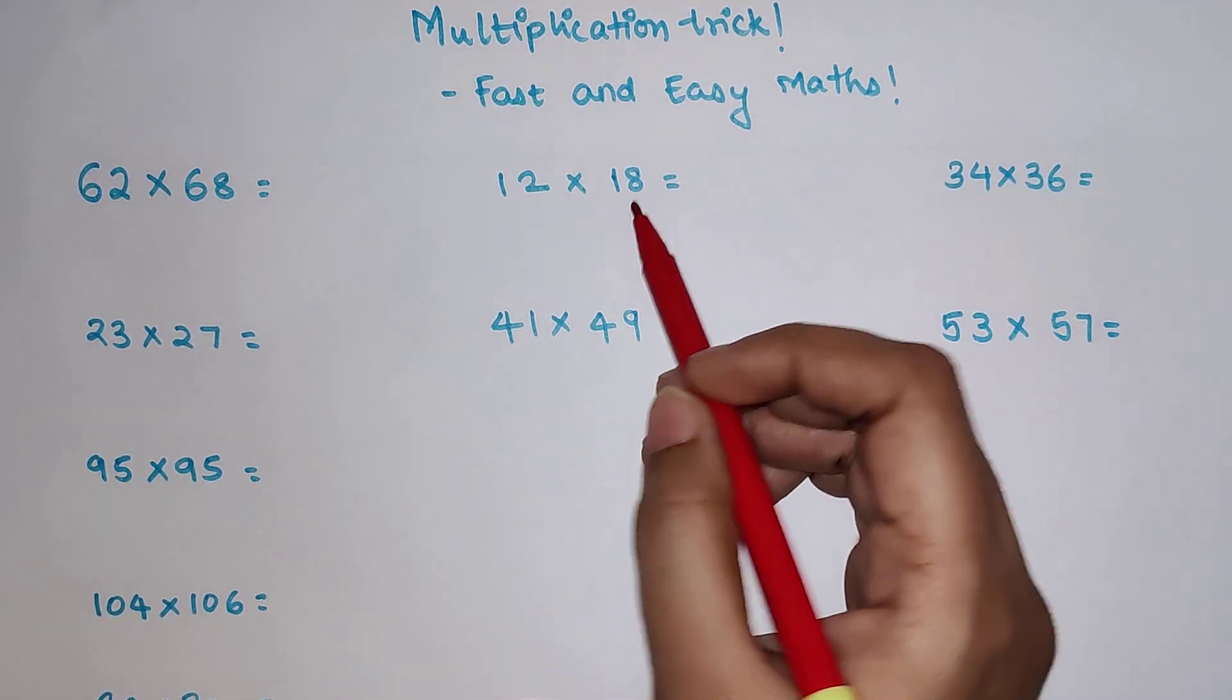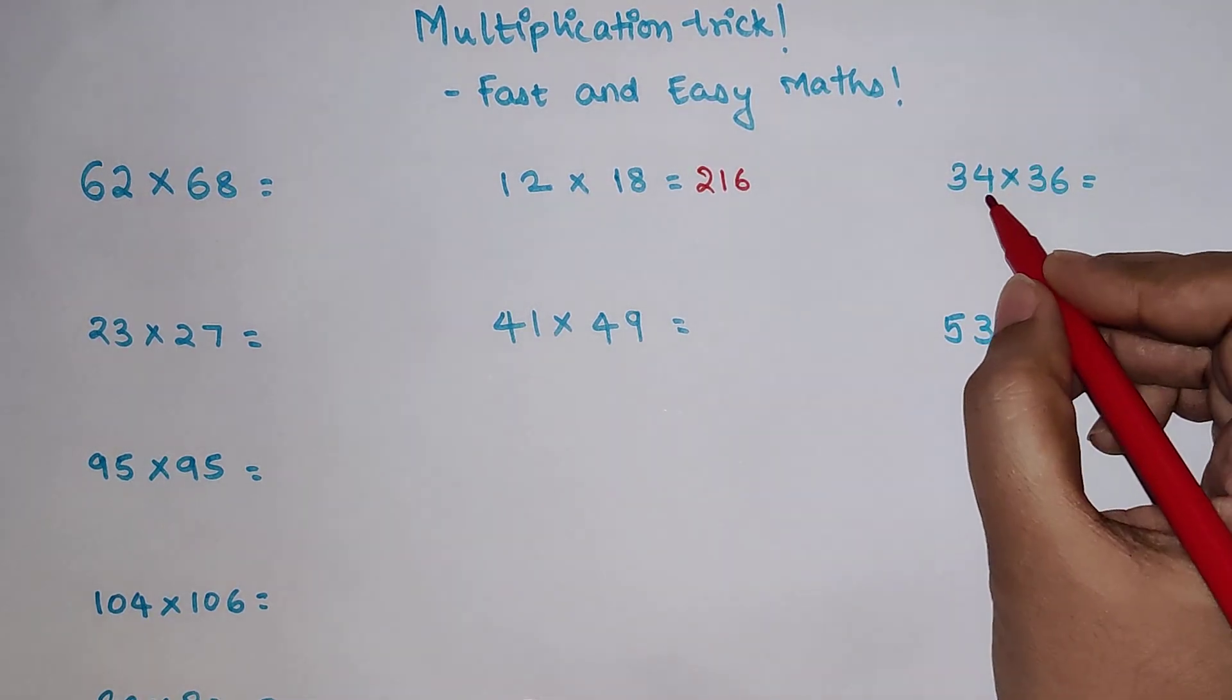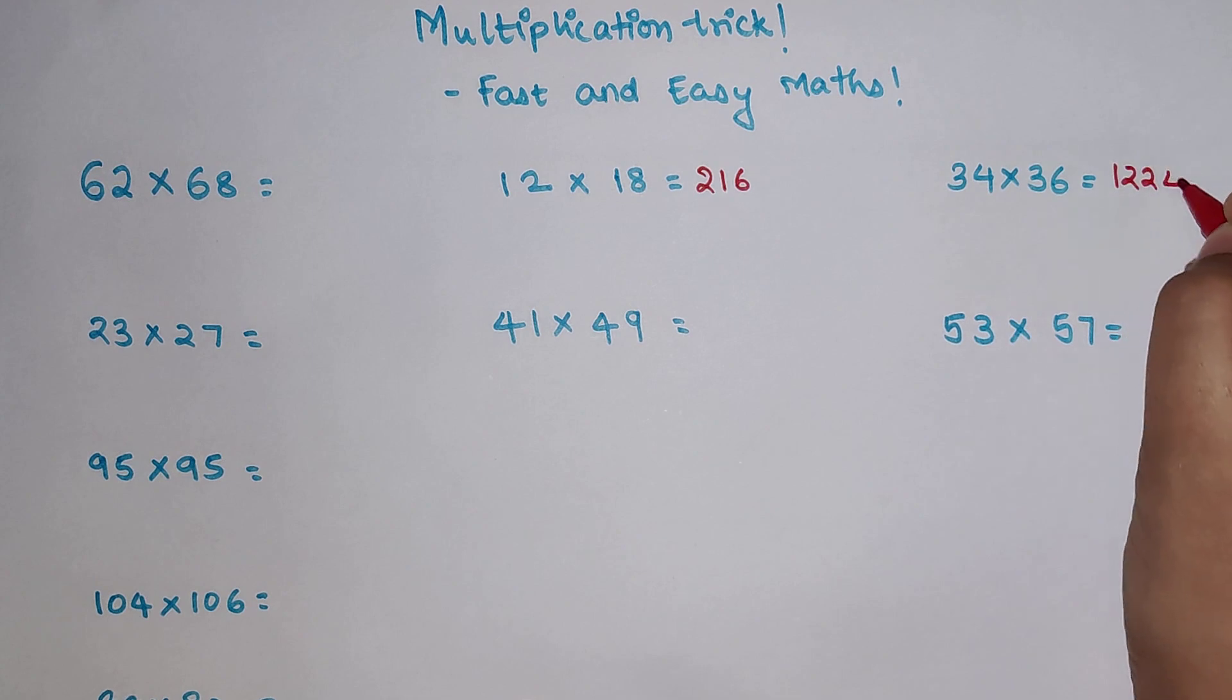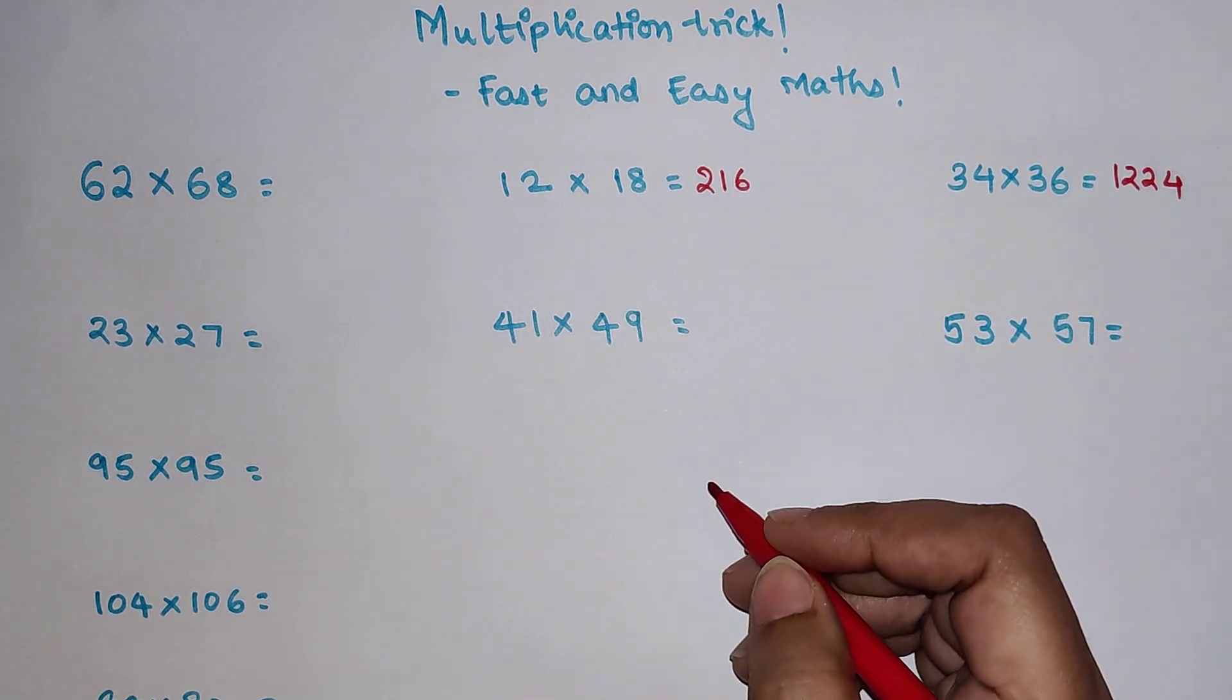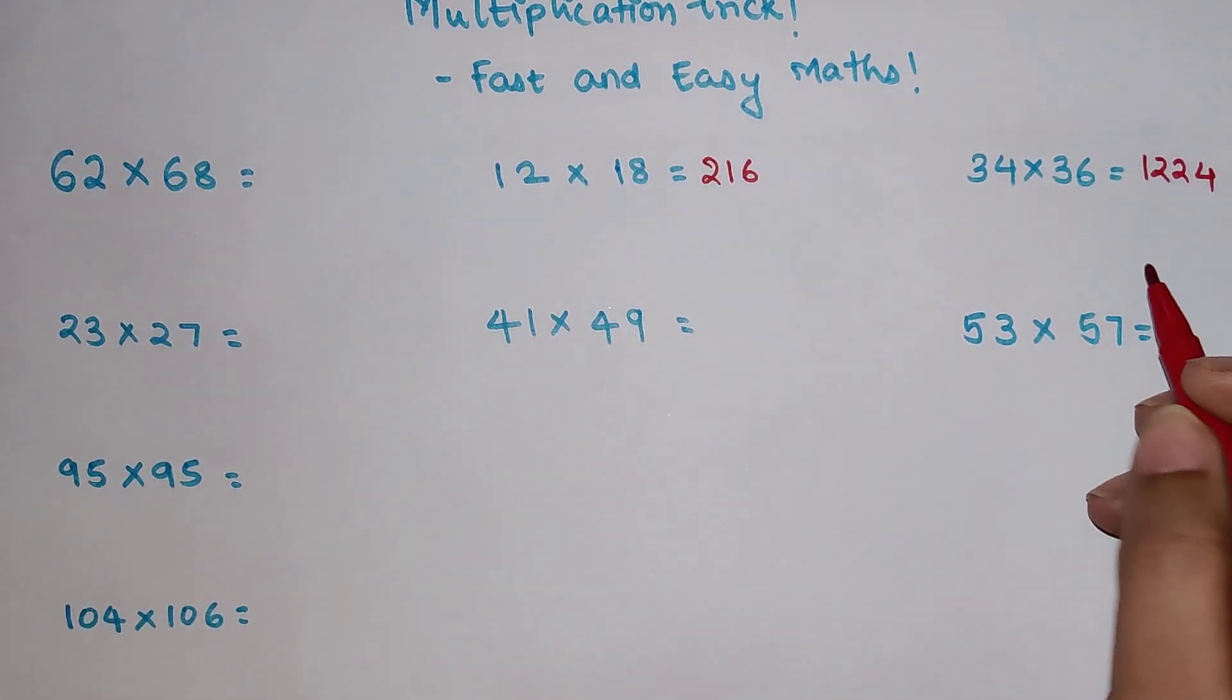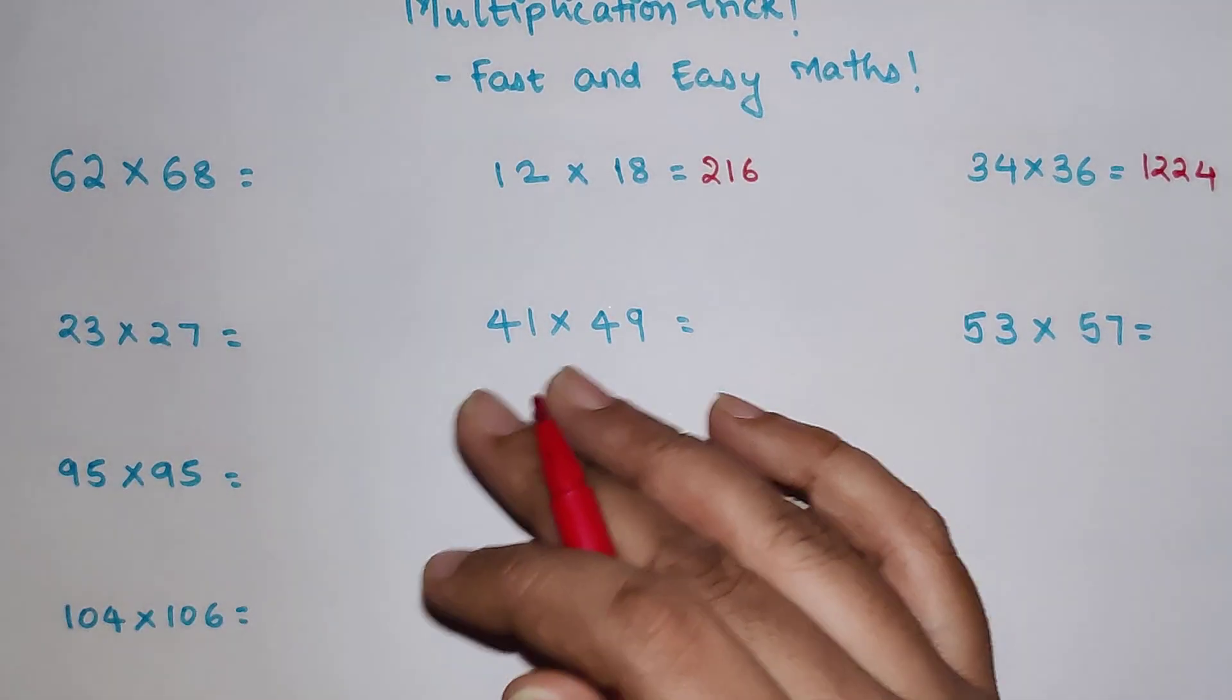So 12 into 18 your answer becomes 216, 34 into 36 becomes 1224. Now I am sure you must be thinking that I have already solved it and somewhere I have written the answers and that is how I am solving these kind of questions. But trust me the trick is simple.